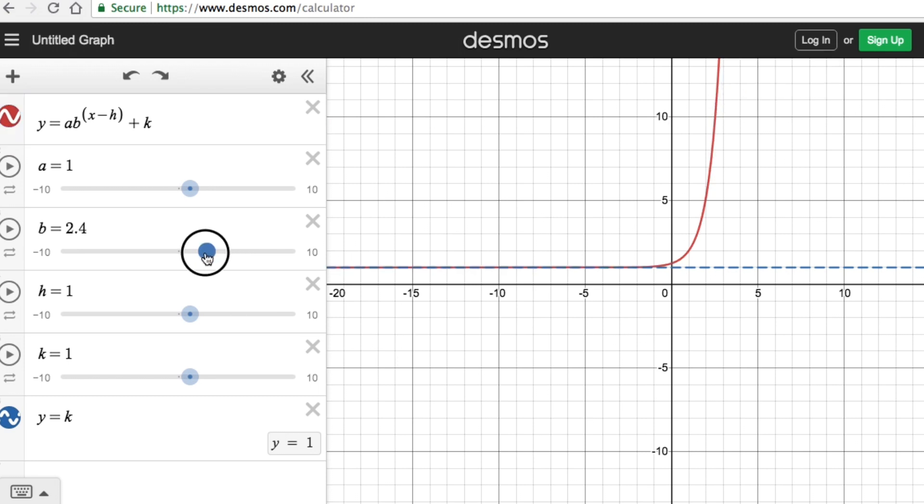When b equals 1, it's going to be a straight line. If b is greater than 0 but less than 1, we call this type of graph that we have right here exponential decay.